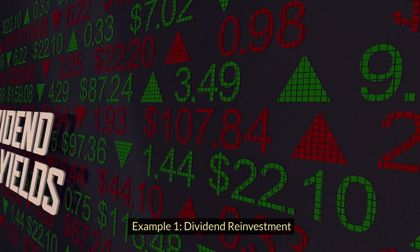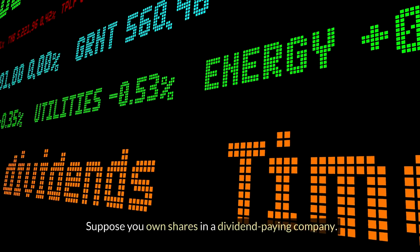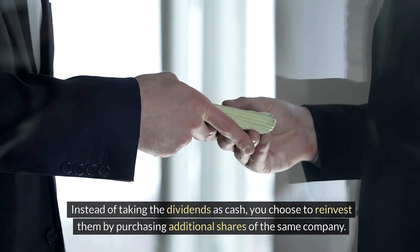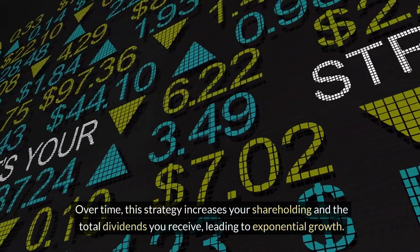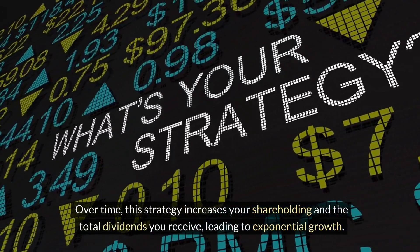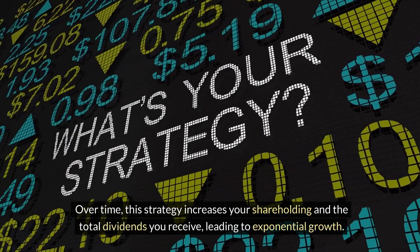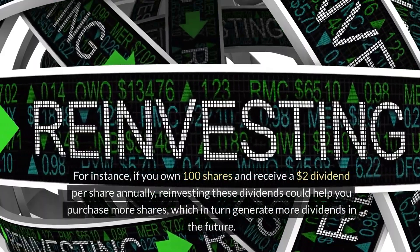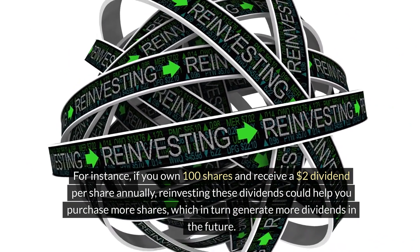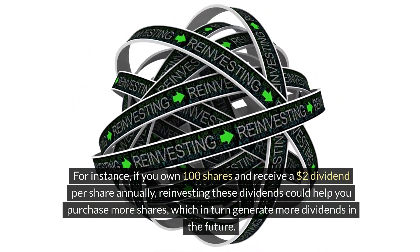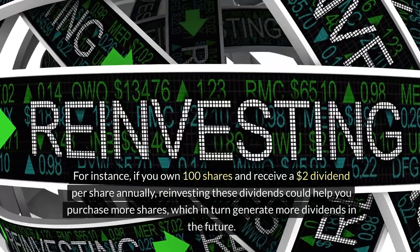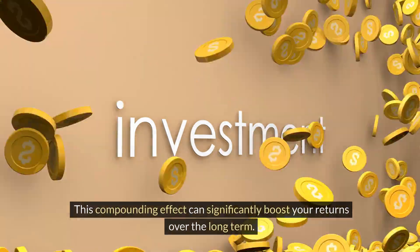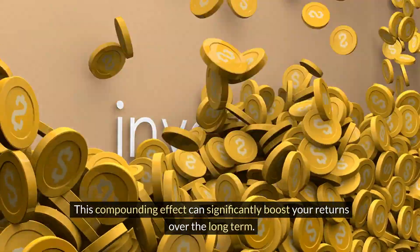Example 1: Dividend Reinvestment. Suppose you own shares in a dividend-paying company. Instead of taking the dividends as cash, you choose to reinvest them by purchasing additional shares of the same company. Over time, this strategy increases your shareholding and the total dividends you receive, leading to exponential growth. For instance, if you own 100 shares and receive a $2 dividend per share annually, reinvesting these dividends could help you purchase more shares, which in turn generate more dividends in the future. This compounding effect can significantly boost your returns over the long term.